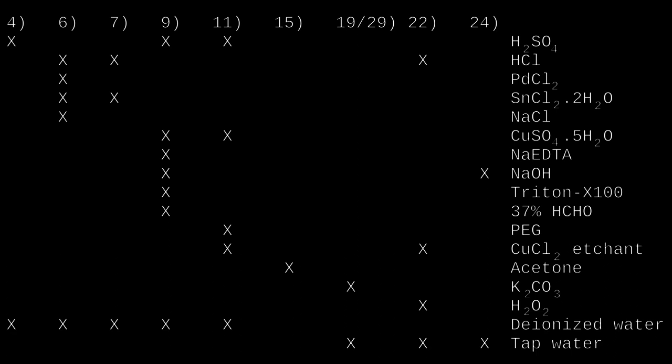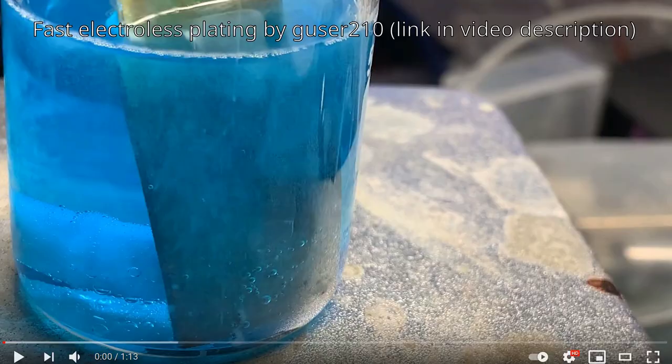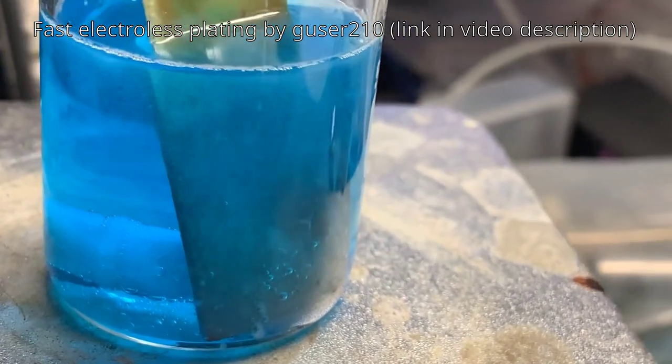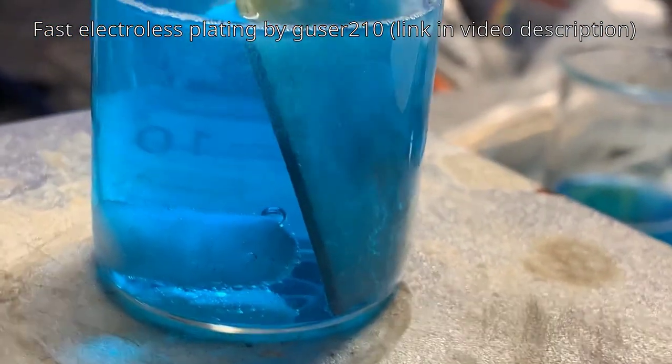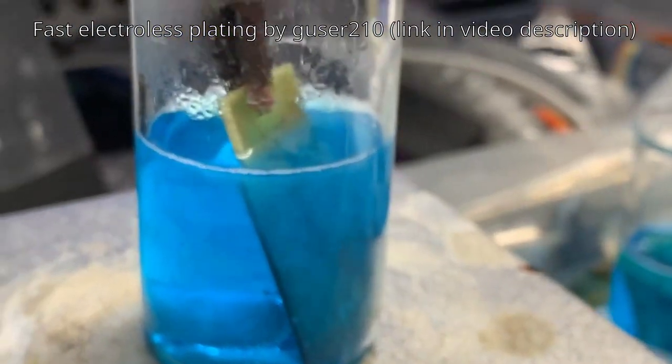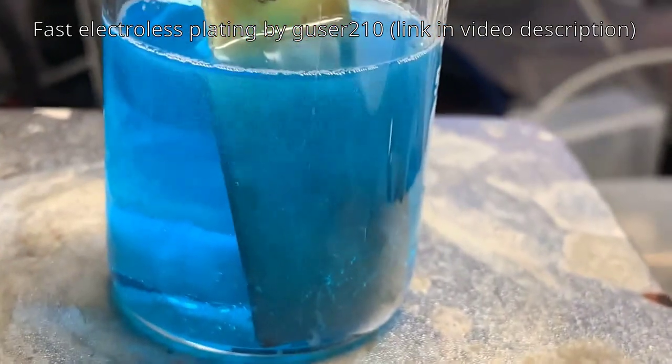To conclude this video I would like to add some remarks. Although process 01 works, I consider it just the beginning. That's why I called it 01, as I expected to be followed by an improved process 02 and so on. Among possible improvements, here are some that I find interesting. YouTube user guser210 experimented with 2-mercaptobenzothiazole to improve the speed of electroless copper plating. If this plating turns out to be fast enough, it could be possible to skip the electrolytic plating steps entirely, reducing the process complexity.